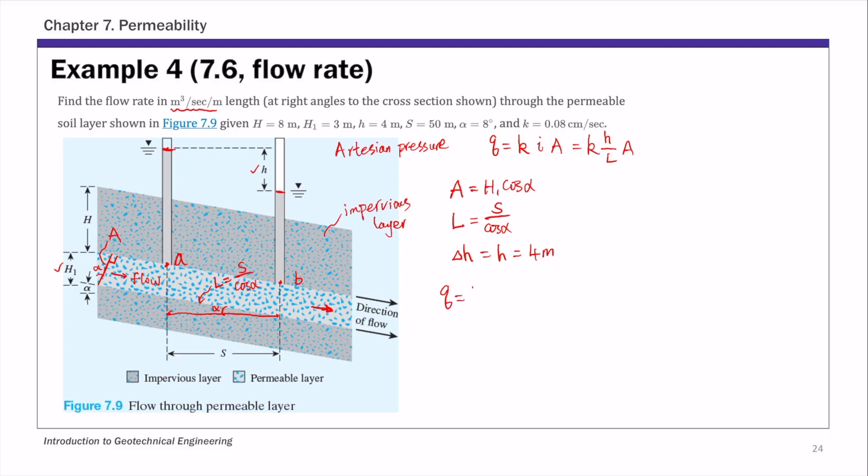So Q equals to KIA equals to, and this K is 0.08 centimeters per second. And I is dimensionless. So we have a dimensionless number. So 4 cosine 8. So that's that head loss divided by, oh excuse me, 4 is head loss. And then that L is basically S over cosine alpha. So this is cosine alpha cosine 8 divided by 50. So again, this is 50 over cosine alpha. So that's how you have that cosine 8 there. And then times cross-sectional area A, which is H1. That's 3 times cosine alpha, which is cosine 8. So that's 3 times cosine 8.